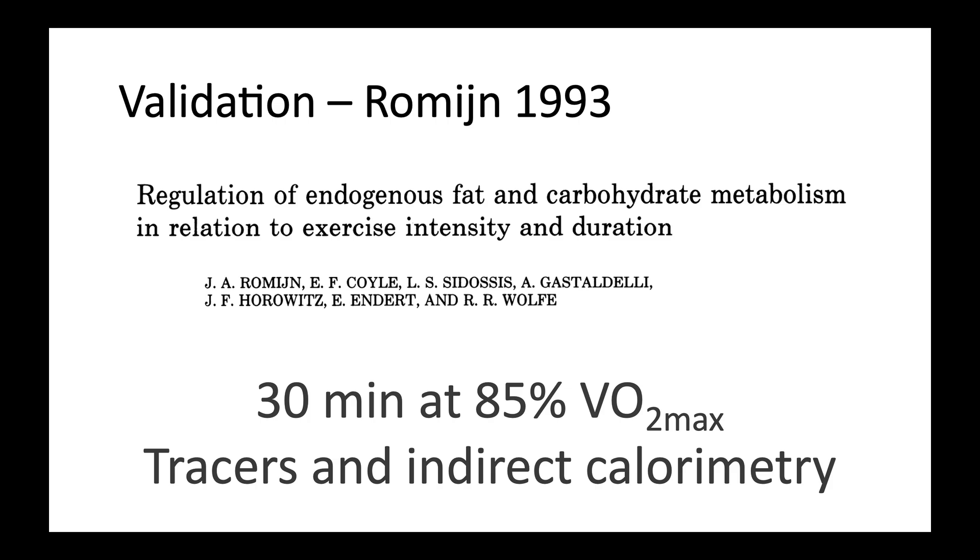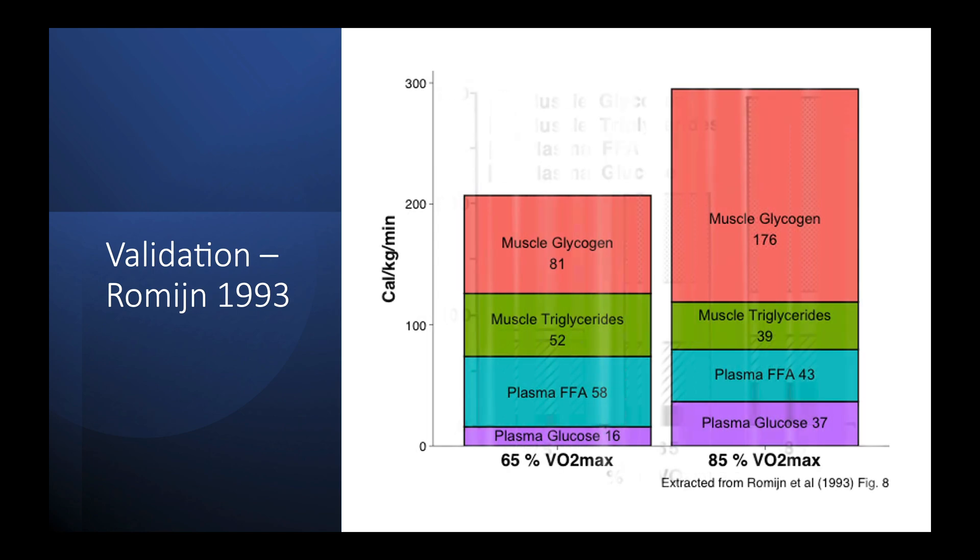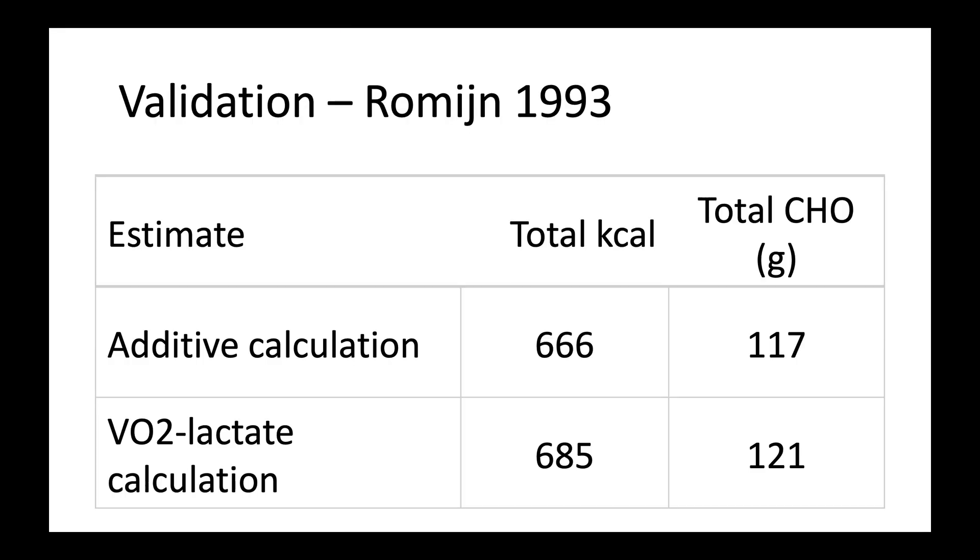The first way is by taking data from this very well-known paper, where they measured cyclists riding for 30 minutes at 85% VO2 max using metabolic tracers and indirect calorimetry. You may recognize this figure, which has made its way into countless physiology textbooks. So I first extracted the data from the study, and then calculated the energy expenditure for the session by adding up the reported values. I then calculated the estimated carb and calorie use using the new approach I've just described, and we can compare it to the estimates from what the paper has produced. And sure enough, they came out really close. The additive calculation refers to the data from the paper, adding up each of the sources they reported, and the VO2 lactate calculation refers to our new method. So that was 30 minutes at 85% VO2 max intensity.